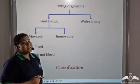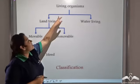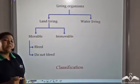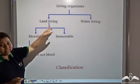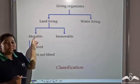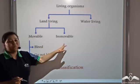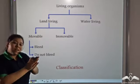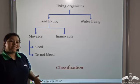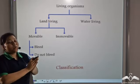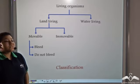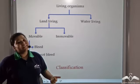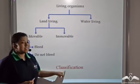He grouped living organisms as land living organisms and water living organisms. Further, he divided the land living organisms as movable organisms and immovable organisms. Movable organisms were further categorized as organisms that could bleed and organisms that could not bleed. His way of putting different animals into different groups is known as classification.